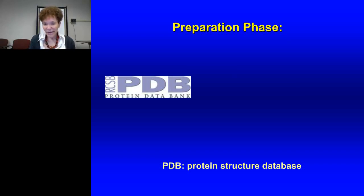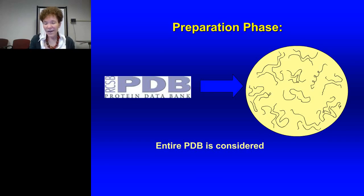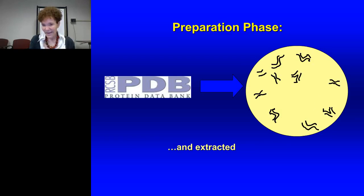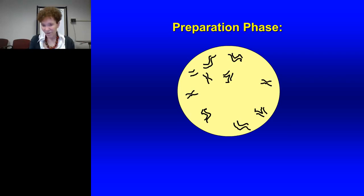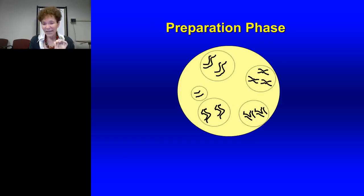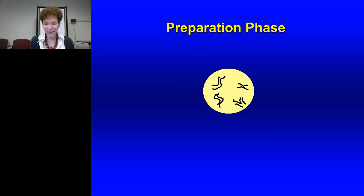To generate the dataset of non-redundant protein-protein interfaces, we start with the PDB — the protein structure database. We consider all molecules: monomers, dimers, trimers. We then mark all two-chain interfaces, extract them, and carry out all-against-all structural comparisons using the geometric hashing algorithm, leading to their clustering. We then pick a representative from each cluster. This representative forms our non-redundant dataset of protein-protein interfaces.